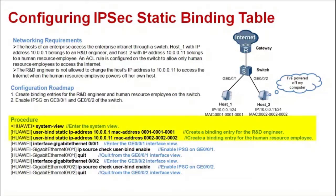Let's see the configuration procedure. Enter the system view. Create a static binding entry in which the IP address is 10.0.0.1 and MAC address is 1-1-1. This entry corresponds to the host used by the R&D engineer. Create a static binding entry in which the IP address is 10.0.0.11 and MAC address is 2-2-2-2. This entry corresponds to the host used by the human resource employee.